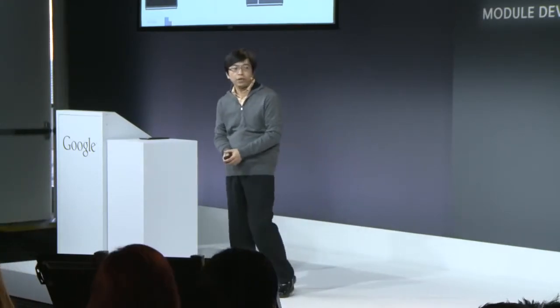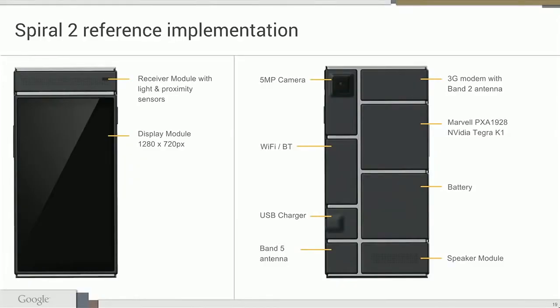Good morning, everybody. I'm going to talk about the Spiral 2 implementation and the goal behind it. There will be 10 modules and one endo for the Spiral 2 design. From the front side there will be receiver modules and display modules. From the back side there are camera modules, connectivity modules, USB charger, and fan/file antenna. From the right-hand side you can see there's a 3G modem, AP module, battery, and speaker modules.